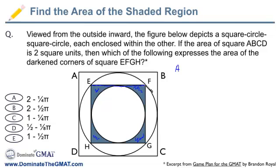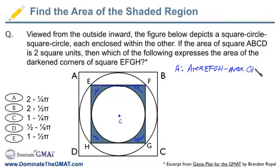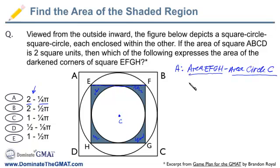If we could take the area of the smaller square EFGH and subtract the area of the smaller circle C, finding those two things separately and subtracting them will give us the answer. When we look at the answer choices, that's exactly what all of them are — they're all comprised of two parts: something minus something else. The something is the area of EFGH minus the area of small circle C.